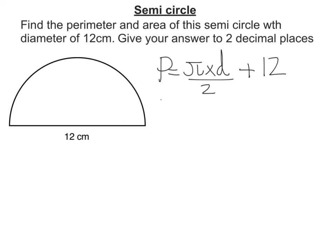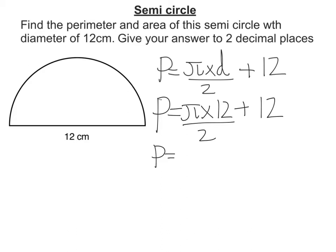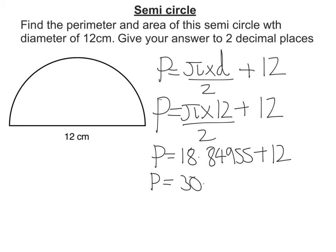So let's substitute in the numbers we know. P is equal to pi times the diameter 12 over 2, plus 12. Let's work out that first bit in the calculator. That gives me 18.84955, and adding 12, P is going to be 30.84955. Rounding to two decimal places, that's 30.85 centimetres.